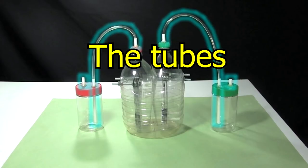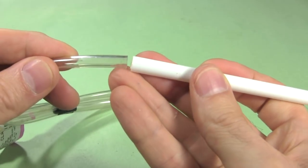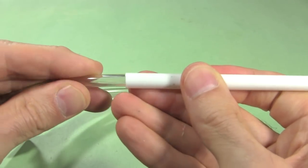Next comes all the tubes for moving the hydrogen and oxygen around. For that I have some flexible quarter inch vinyl tubing from a hardware store and some polystyrene tubes from a hobby store. The vinyl tubes fit snugly inside the polystyrene ones.